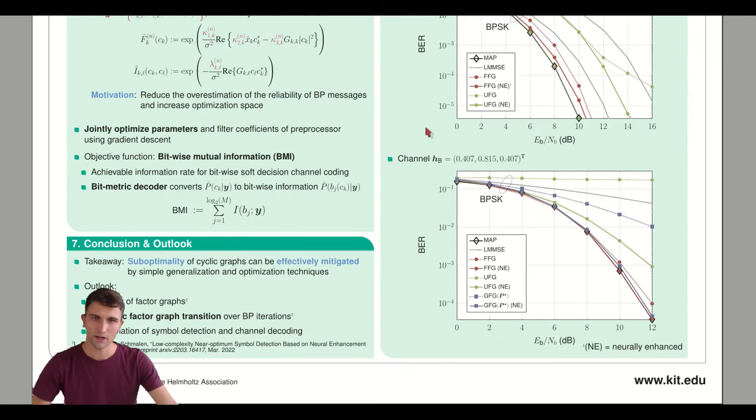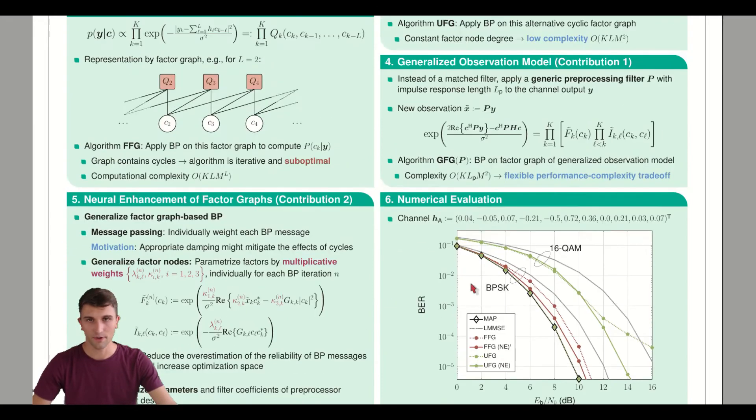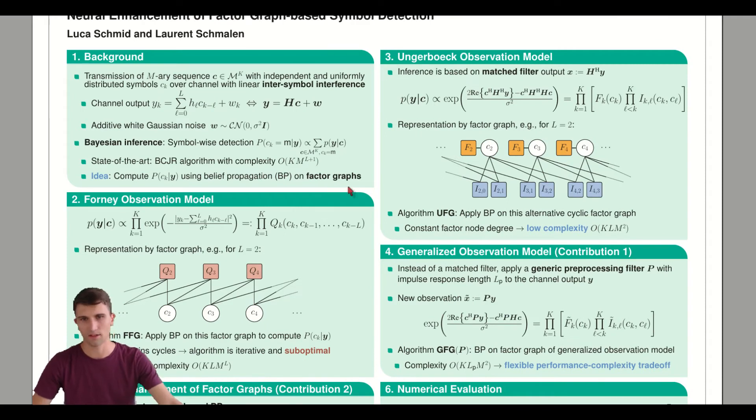But if we look at an alternative channel, a quite short channel, the situation is completely different. Now the Ungerberg observation model in green performs really poorly, and the Forney model is near to optimality but has a gap. The performance is quite channel dependent, and the observation model is really important and matters in terms of symbol detection performance. This is the motivation for our first contribution.